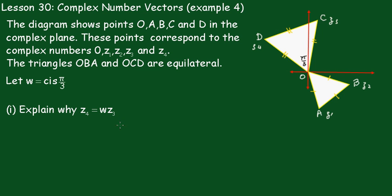Now we're going to explain why Z4 equals W times Z3. We'll say that Z3 is equal to R cis θ and we know that W equals the cis of π upon 3.